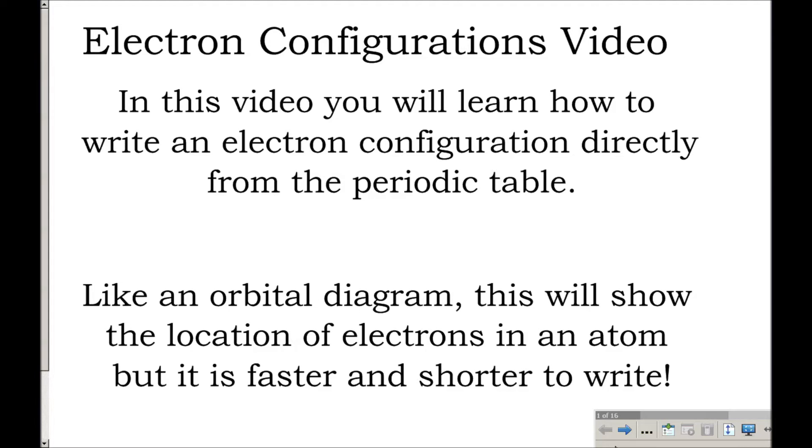All right, so this is Mrs. Crane, and this is the electron configurations video. In this video, you are going to learn how to write something called an electron configuration and you're going to be able to write it directly from the periodic table. So it is sort of like an orbital diagram, but it's going to show the location of electrons in an atom faster, and it's going to be shorter to write than the orbital diagram.